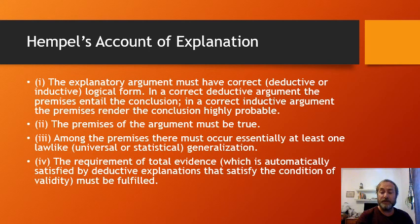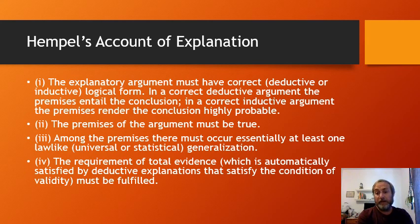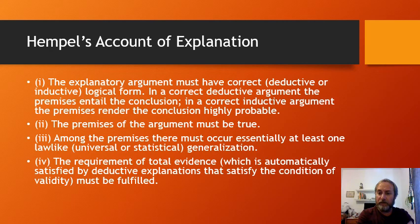Second, the premises must be true — being corroborated isn't good enough. Third, among the premises there must be at least one essential law of nature, either a universal generalization or a statistical generalization such as 'the probability of being F given G is 0.5.' Finally, Hempel's requirement of maximal specificity — or what Salmon calls the requirement of total evidence — demands all relevant information to avoid wrong probabilities.